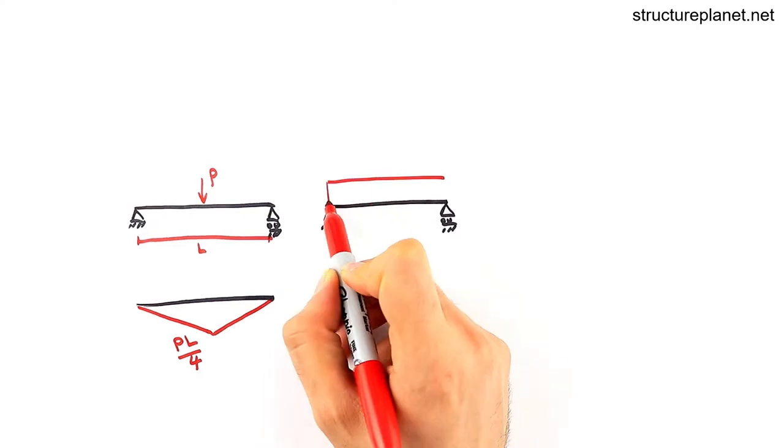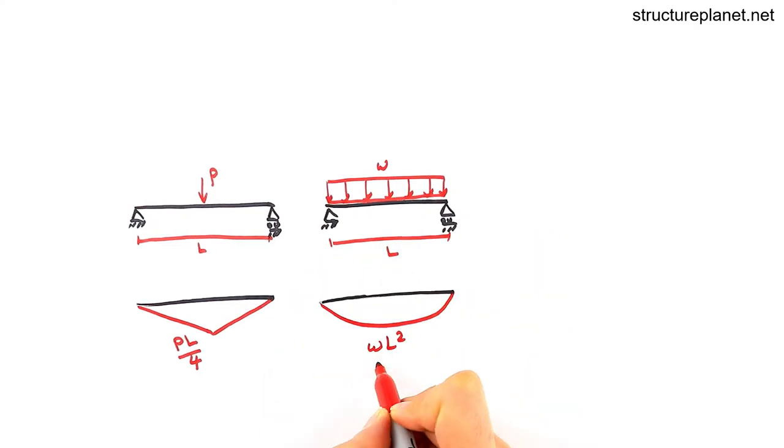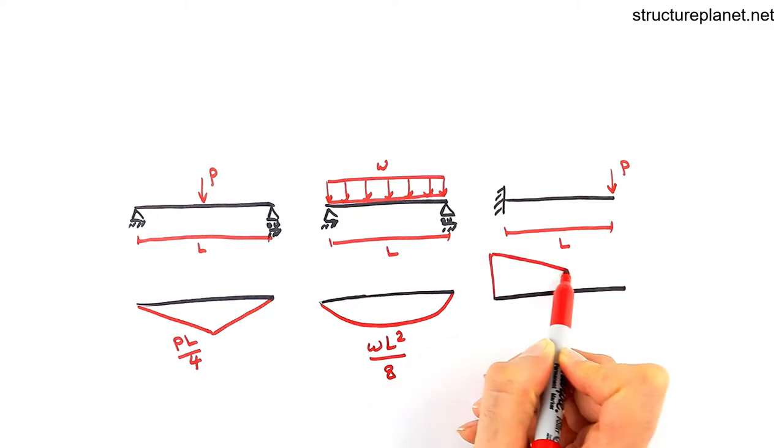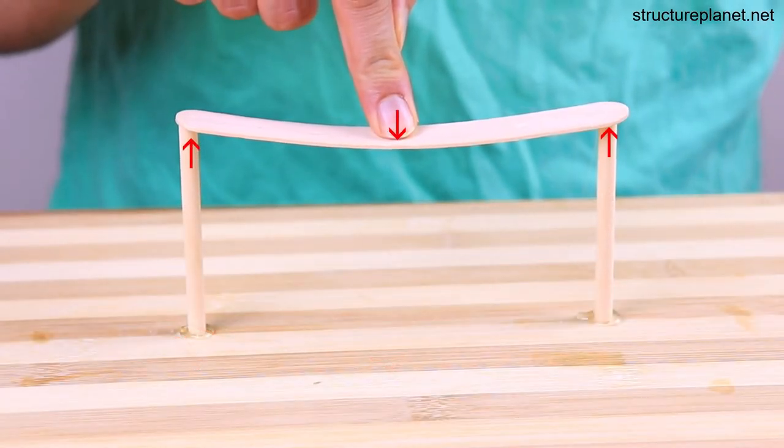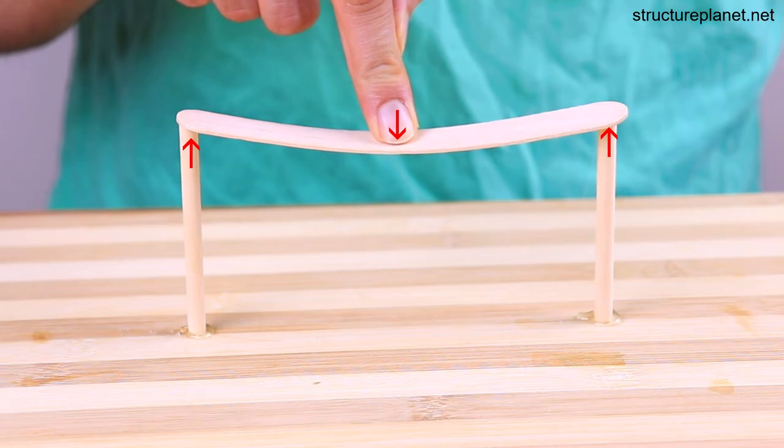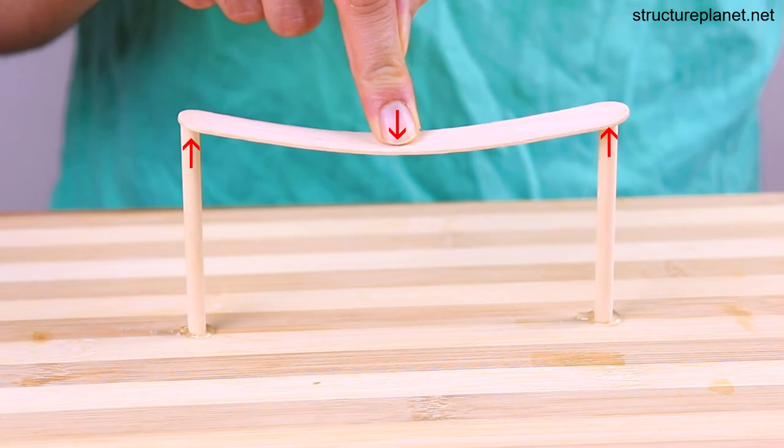Like shear force diagrams, engineers use moment diagrams to read the various values of bending moment along the length of the member. To illustrate moment and shear force better, let's place a wood stick on two supports and push the middle down. This applied external load will create shear force and bending moment in the stick.